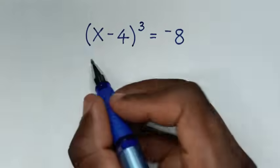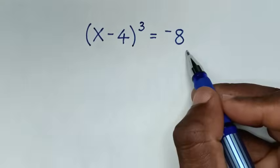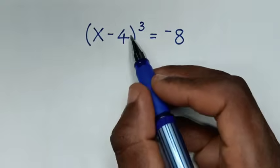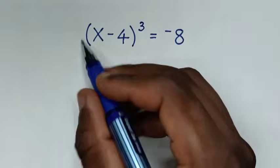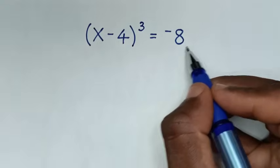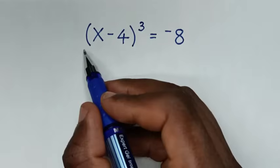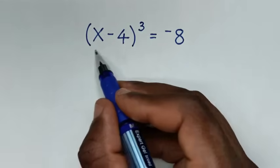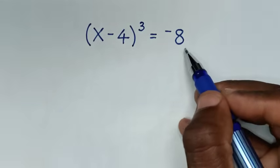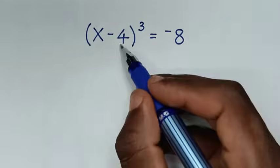Hello, you are welcome to solve this math problem which is (x - 4)³ = -8, to find the values of x from this equation. In the first step we'll take this negative 8 to the left side.